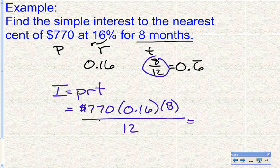So you could try plugging in 0.66666. I just think that this is easier to do it this way. So if you have months, put your monthly value here, the number of months, and then divide the whole thing by 12, because there's 12 months in the year. So I'm going to do 770 times 0.16 times 8 divided by 12, and I get $82.13 after I round it.